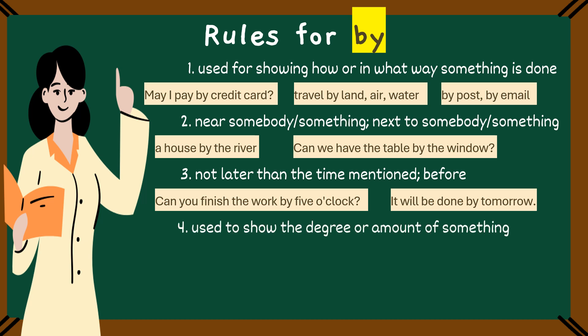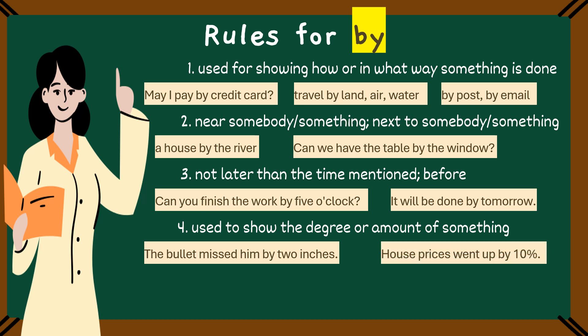Showing degree or amount. By shows the degree or amount of something like measurements or increases. For example, the bullet missed him by 2 inches. Here, by shows the exact amount, 2 inches. Next example: house prices went up by 10%. Children, this example tells us the amount or percentage increase in prices.